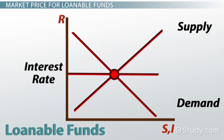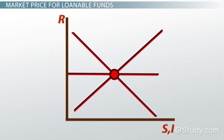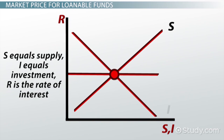This chart depicts the loanable fund market at equilibrium, where S equals supply, I equals investment, and R is the rate of interest.